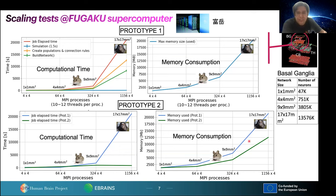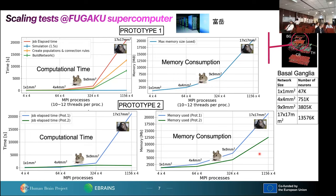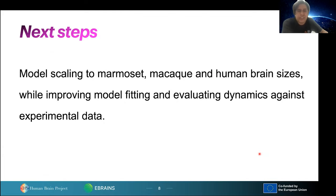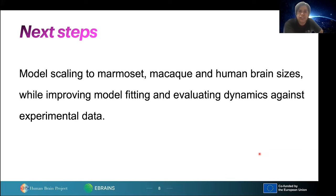Memory can still be improved. NEST team is now working towards prototype three, which we are currently testing on Fugaku at the whole-brain scale — I don't have the data yet but will be happy to share when I get it. The next step in Exa Brain Prep is to continue testing scaling to marmoset, macaque, and if possible the human brain size, while improving model fitting and evaluating model dynamics against experimental data.